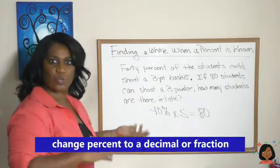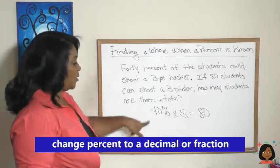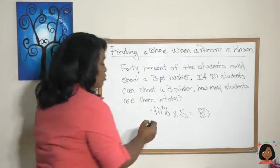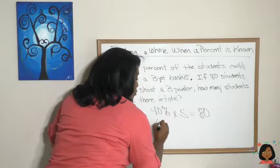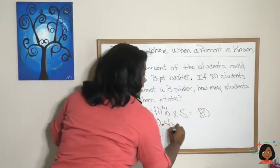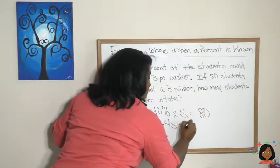Now before we can work on this problem, we've got to take this percent and either turn it into a fraction or a decimal. It's really easy when you have that zero hanging on at the end to turn your 40 into a 0.4. So 0.4s equals 80.